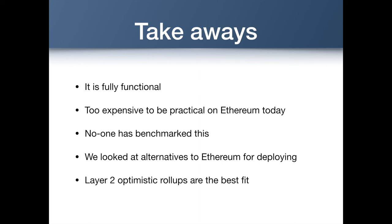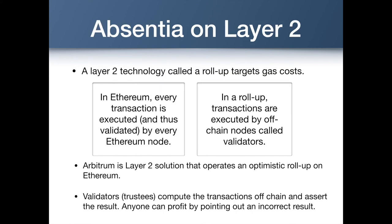Here are some takeaways. Our system is fully functional. As our measurements show, it is too expensive to be practical on Ethereum today. No one has benchmarked this before, and one of our aims was to understand how expensive it was going to be. In order to address the high cost, we looked at alternatives to Ethereum for deploying, and layer 2 optimistic rollups are the best fit for reducing gas costs. Now I will talk about Absentia on layer 2.